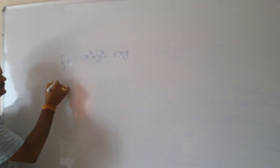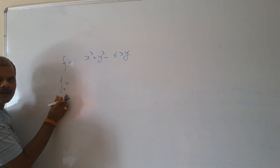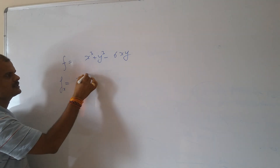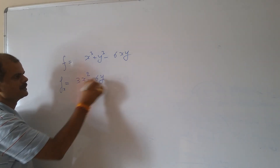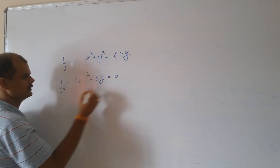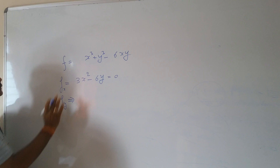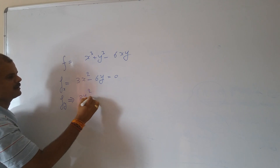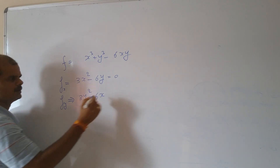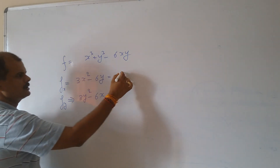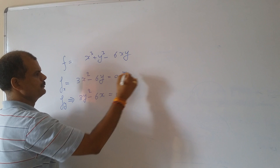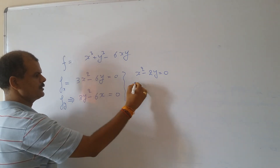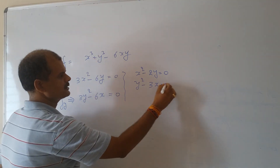Following the working procedure: fx — partial differentiation of f with respect to x, y will be constant — gives 3x² minus 6y, set equal to 0. And fy — partial differentiation with respect to y — gives 3y² minus 6x equal to 0.